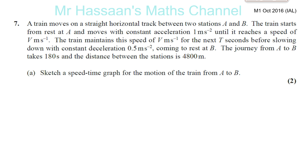It says a train moves on a straight horizontal track between two stations A and B. The train starts from rest at A and moves with constant acceleration 1 m per second squared until it reaches a speed of V m per second. The train maintains this speed of V m per second for the next T seconds before slowing down with constant deceleration 0.5 m per second squared, coming to rest at B. The journey from A to B takes 180 seconds and the distance between the stations is 4,800 m.